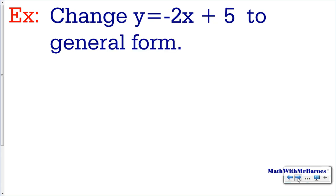Let's try the next one. Again, I'll subtract y from both sides. So I have 0 equals negative 2x minus y plus 5.